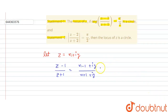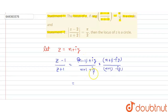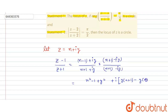Now simplify this — rationalize first. Multiply numerator and denominator by (x plus 1 minus iy). In the numerator, we get (x minus 1)(x plus 1), which is x squared minus 1, and minus i squared y squared, which gives plus y squared. The imaginary part gives y(x plus 1) minus y(x minus 1). The denominator is (x plus 1)² plus y², using the formula a squared minus b squared, since minus i squared equals 1.